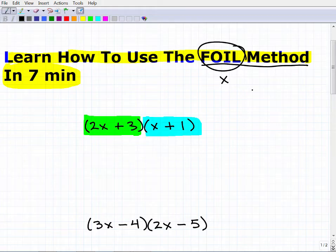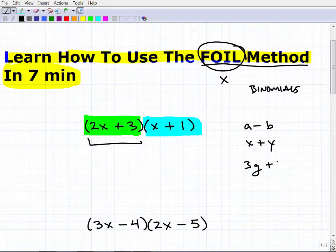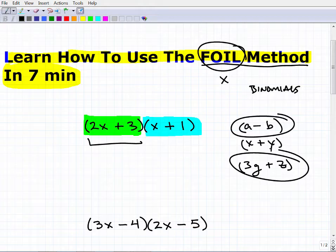Specifically what we call binomials. Binomials, hopefully I spelled that right. And a binomial is a polynomial that has two terms. So we have something here plus something here, or something here plus something here. You could have something subtracted from something. So for example, you could have a minus b, x plus y, 3g plus z. All of these guys here, we could put parentheses around them, are binomials. So if we take one binomial, we multiply them by another binomial, the FOIL method is a specific procedure we follow to multiply two binomials.